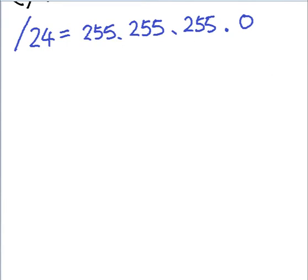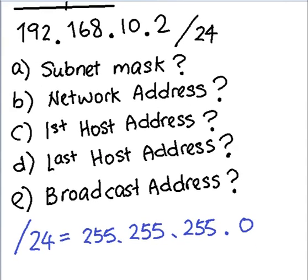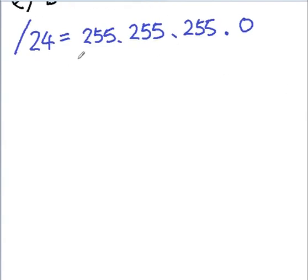So in this case, using this subnet mask, we can see that combining this with the IP address 192.168.10.2, we can see that the network portion belongs to this part.